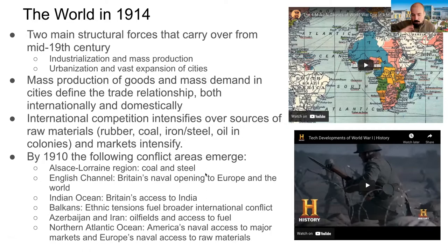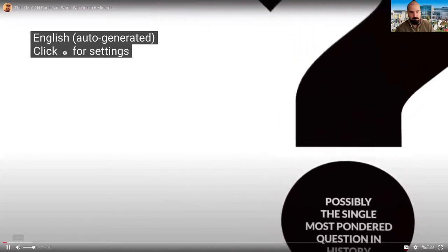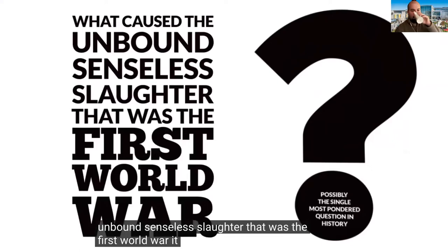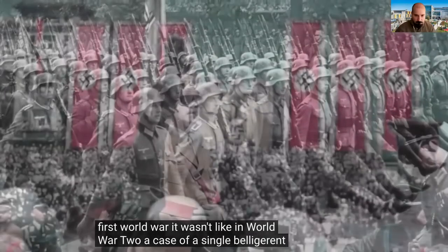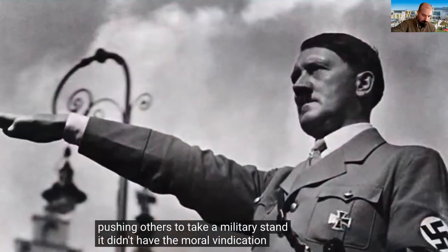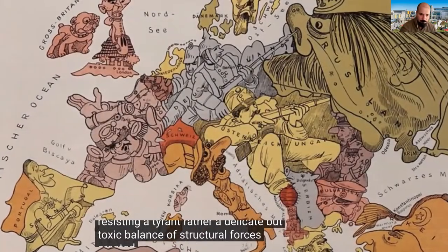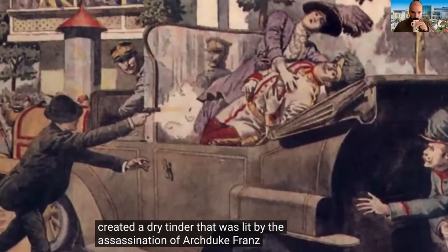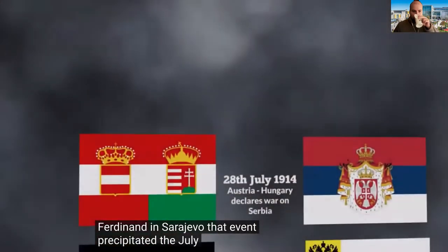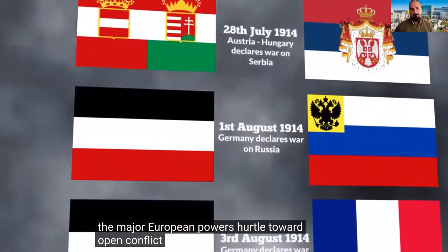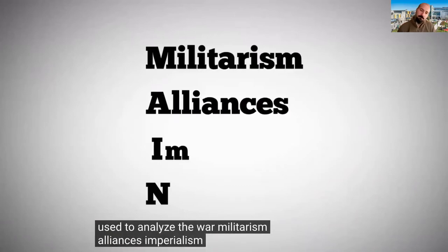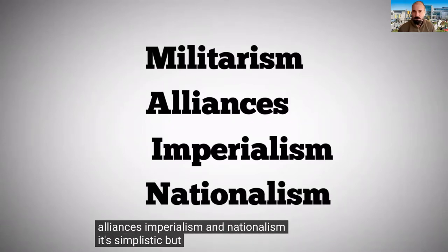These six main conflict areas all blew up in 1914 and led to World War One. Now let's refresh our memory on why World War One started — possibly the single most pondered question in history. It wasn't like in World War Two, a case of a single belligerent pushing others to take a military stand. It didn't have the moral vindication of resisting a tyrant. Rather, a delicate but toxic balance of structural forces created a dry tinder lit by the assassination of Archduke Franz Ferdinand in Sarajevo. The main acronym often used to analyze the war is MAIN: Militarism, Alliances, Imperialism, and Nationalism — simplistic but a useful framework.